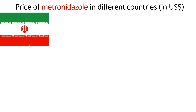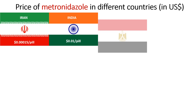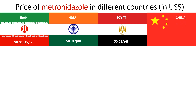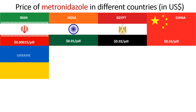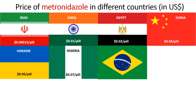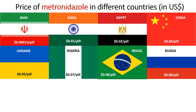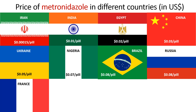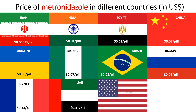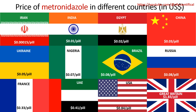The price of metronidazole per pill in USD: Iran — less than 1 cent, India — 1 cent, Egypt — 2 cents, China — 3 cents, Ukraine — 5 cents, Nigeria — 7 cents, Brazil — 8 cents, Russia — 8 cents, France — 53 cents, UAE — 41 cents, United States — 84 cents, United Kingdom — $1.08.